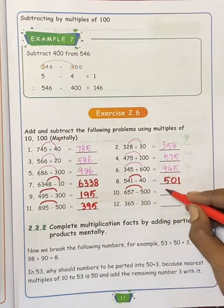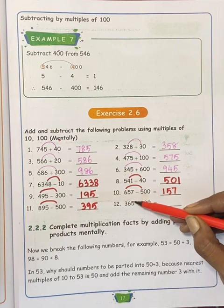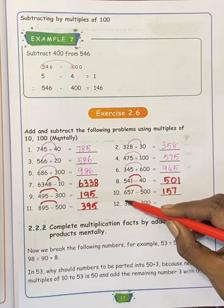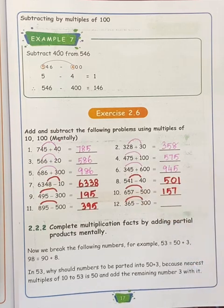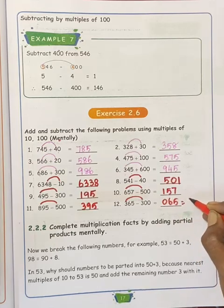Next one, 365 minus 300. So 3 minus 3, 0. This is equal to 65. Bye.